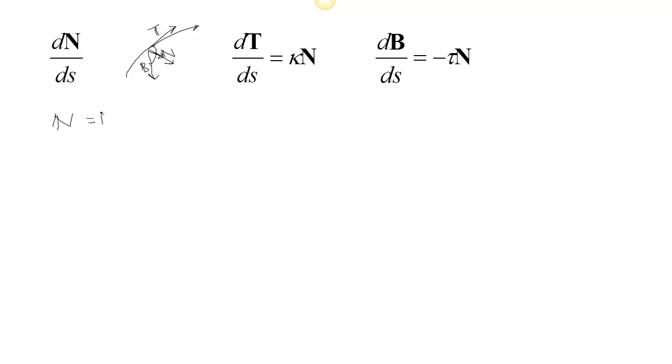So N is really B cross T. Let's now take the derivative of N with respect to S. Because of the product rule we get the derivative of the first cross the second plus the first, which is B, crossed with the derivative of the second.